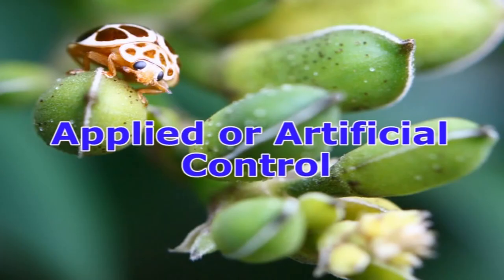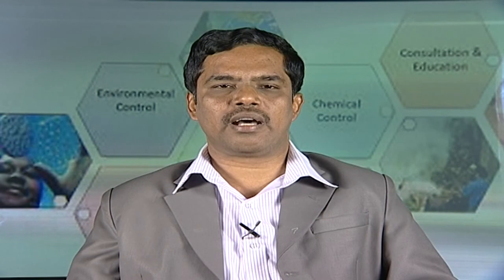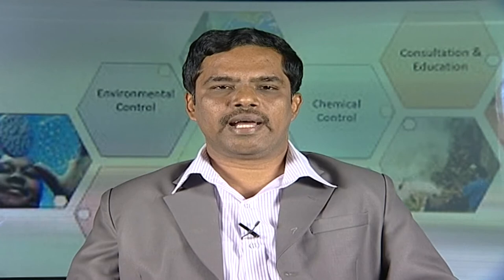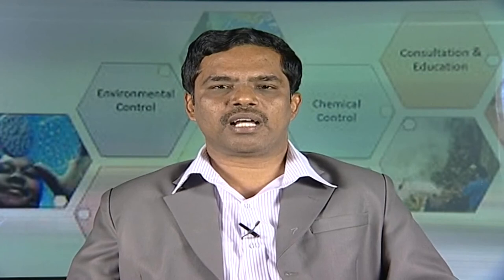The different methods of artificial control can be grouped into cultural, mechanical, physical, legal, biological, genetic or autocidal, and chemical methods. Depending upon whether these measures are taken as a preventive step before actual occurrence of the pest, or as a curative step to eliminate insects after they have gained a foothold in the crops, the control methods are termed prophylactic (preventive) or curative (direct) methods respectively.